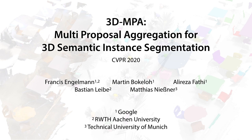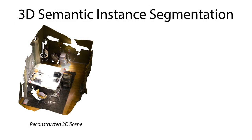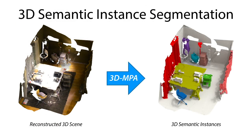We present a new approach for 3D instance segmentation of RGBD scans. Given a reconstructed 3D scene, we propose an object-centric approach to predict accurate 3D semantic instances.